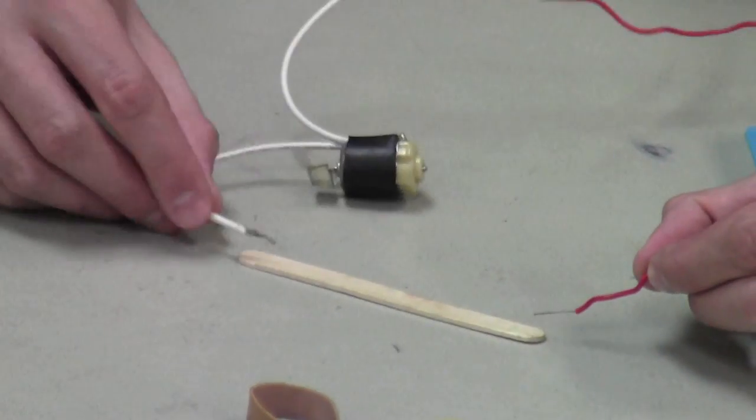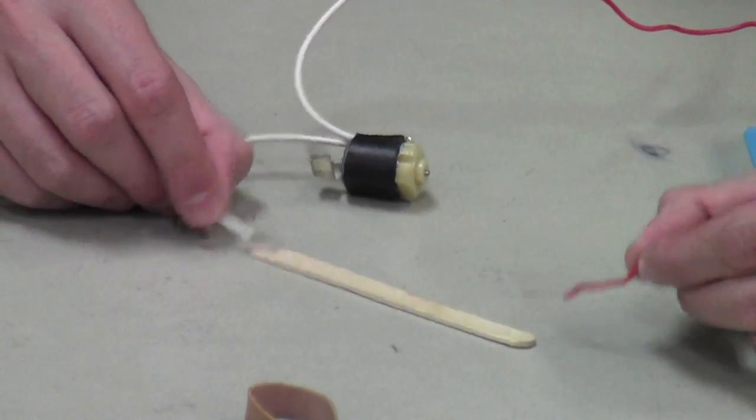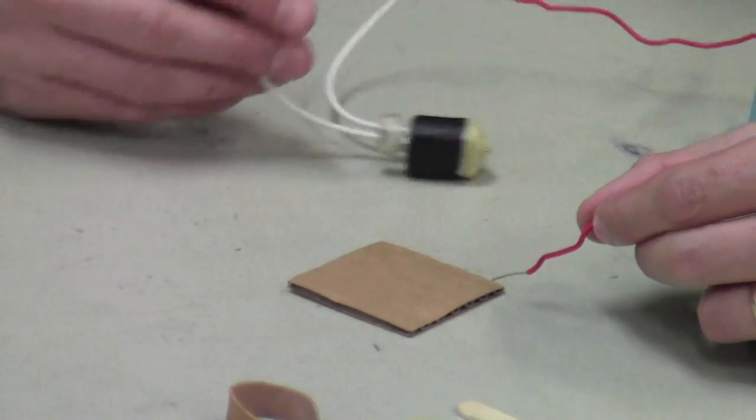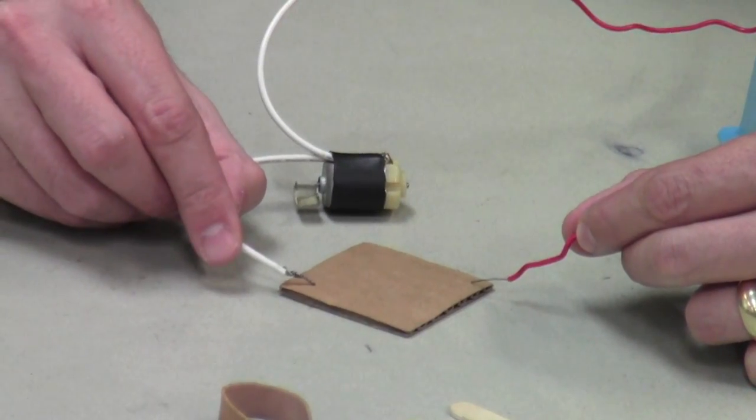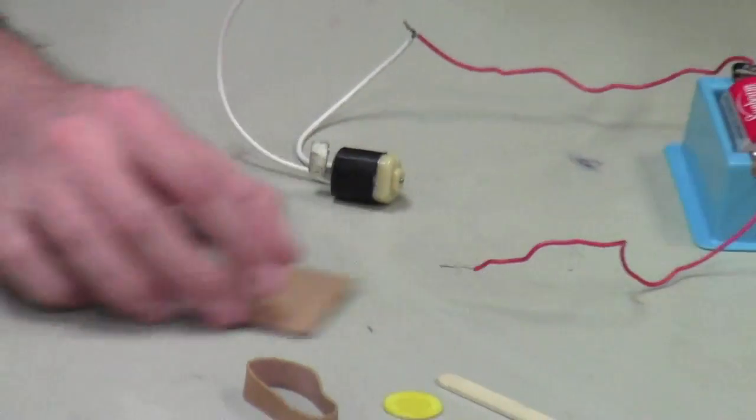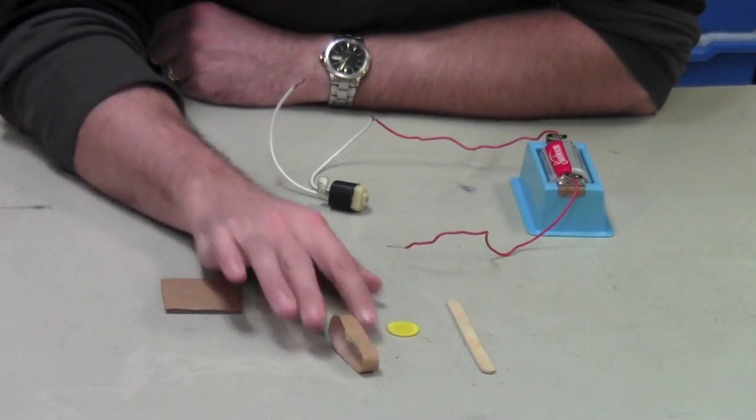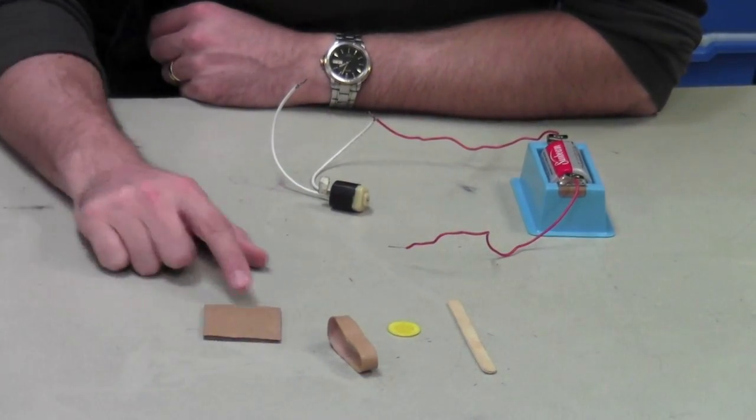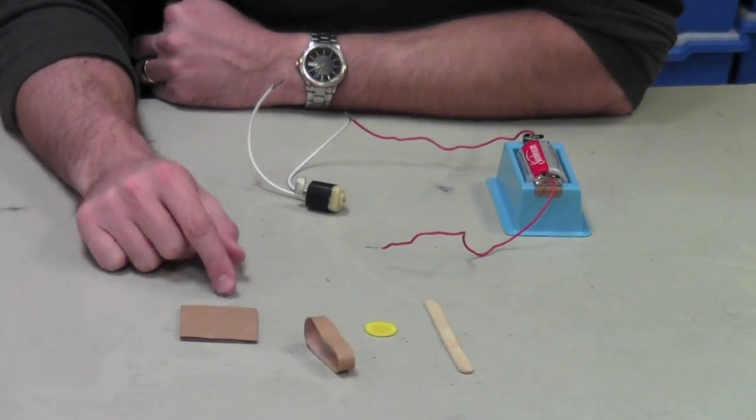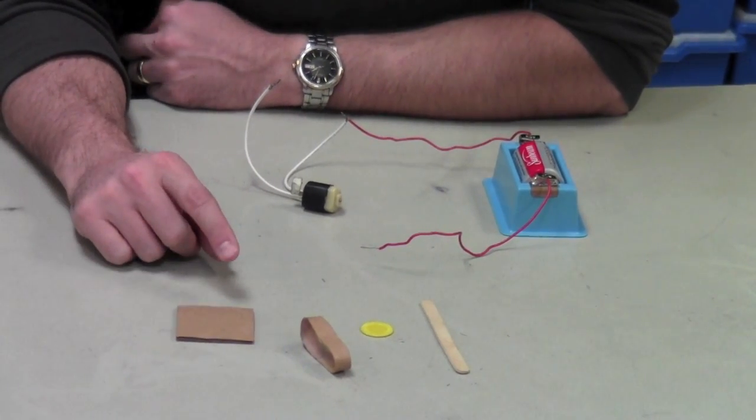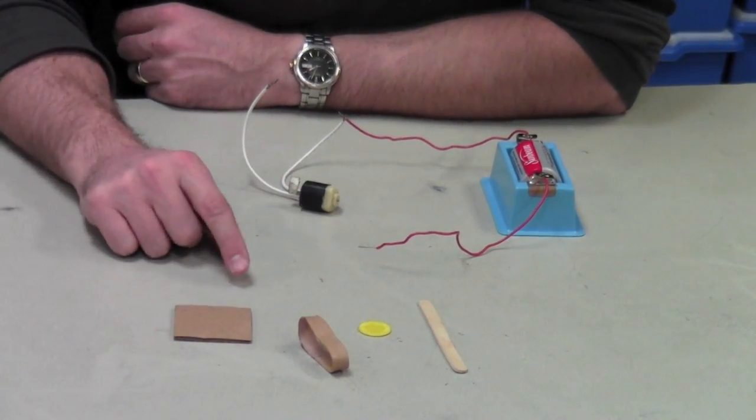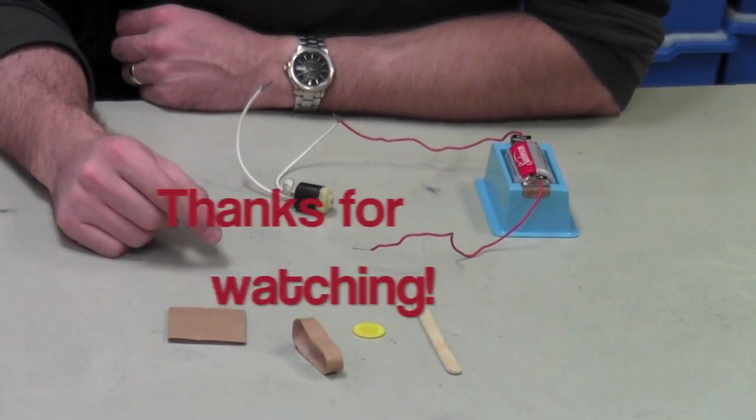Two more items, the wooden popsicle stick and the piece of cardboard, both will not allow electrical energy to flow through it. So in this case, items or pieces of matter such as wood, plastic, rubber, or cardboard paper are considered electrical insulators because they do not allow or they block electrical energy from flowing through it.